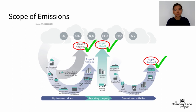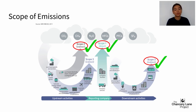There are several difficulties with including scope three emissions — for example, a lack of high-quality scope three data, the fact that companies do not control these emission sources, and issues of double counting. A couple of solutions include setting materiality thresholds — for example, requiring inclusion of all significant emission categories so that a maximum of 5% of overall emissions are omitted. Or you could stipulate that only particular sectors with very high scope three exposure — such as oil and gas, mining and metals, and automobiles — have to disclose them.